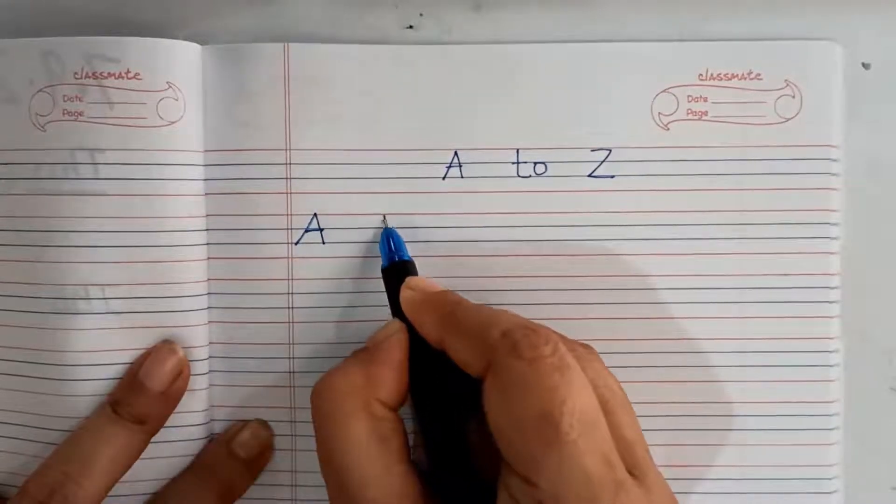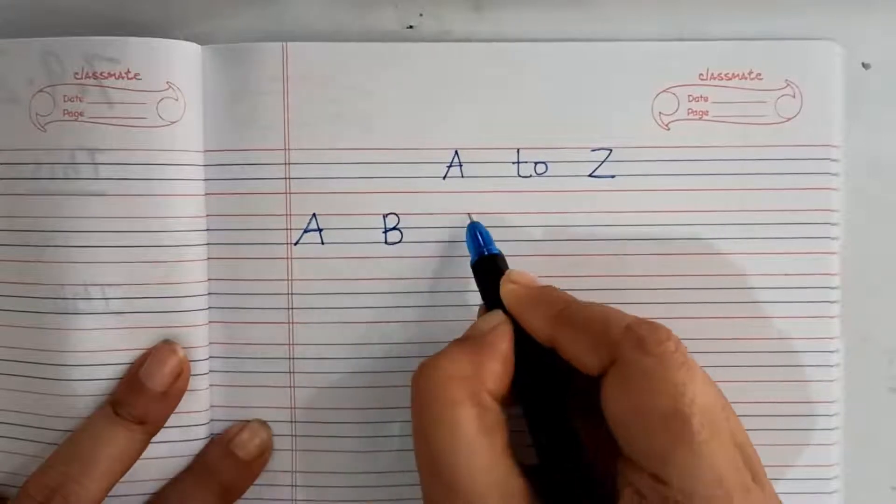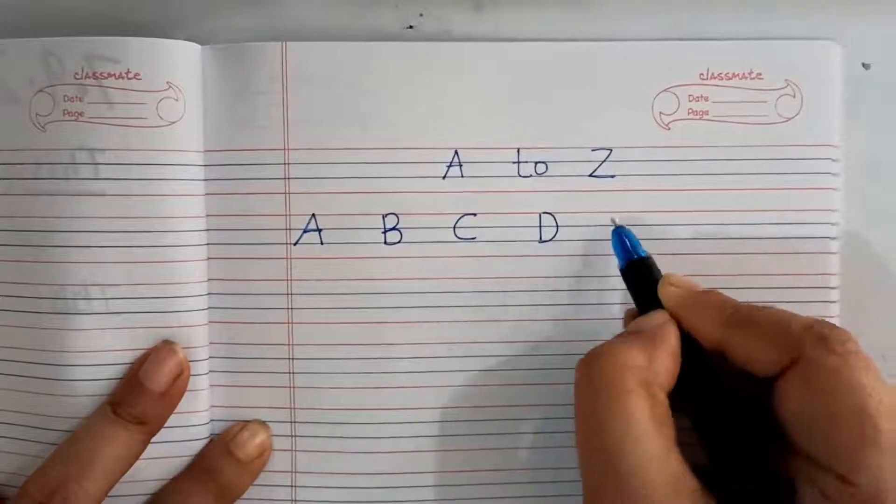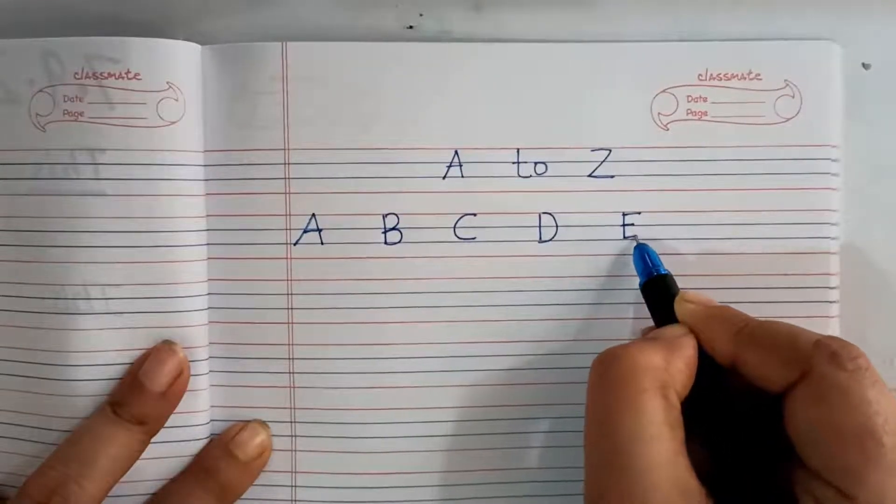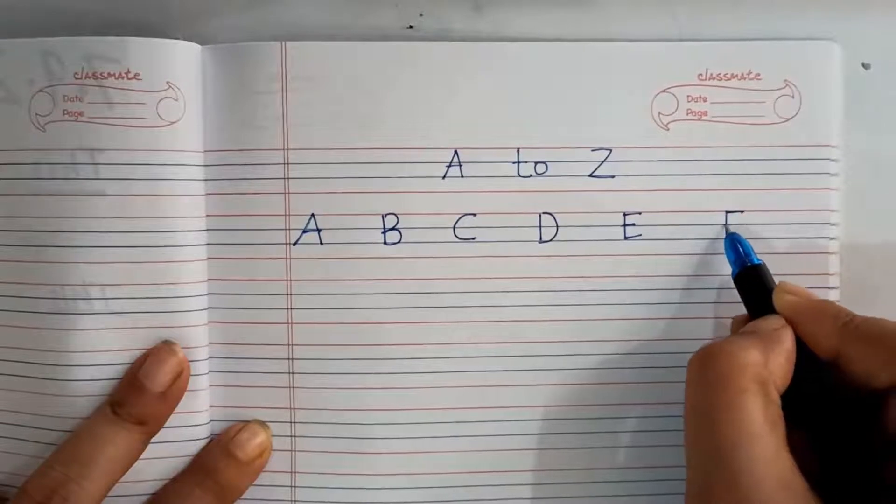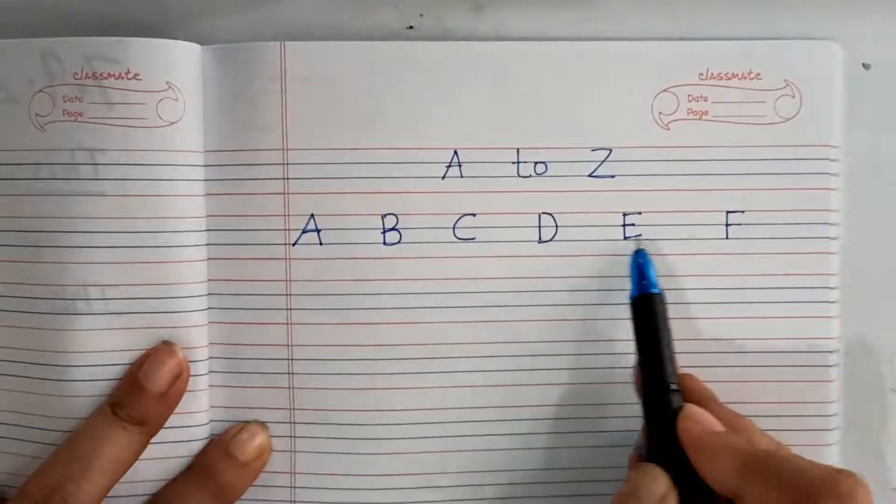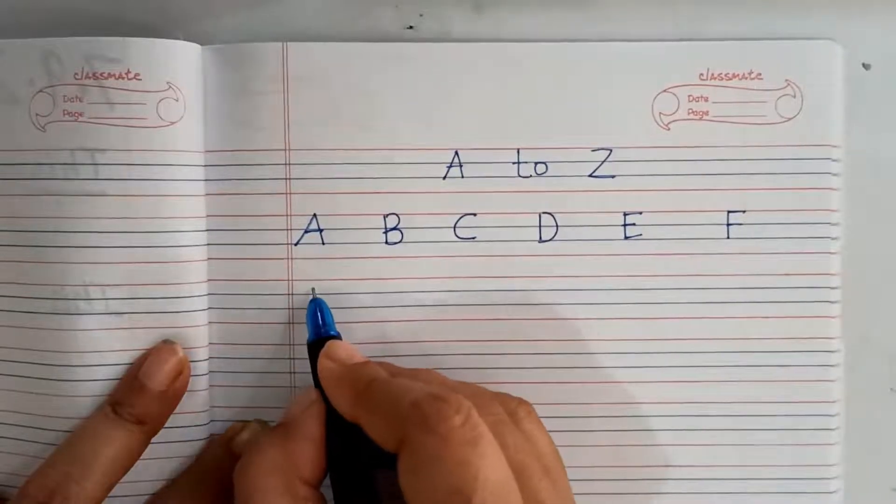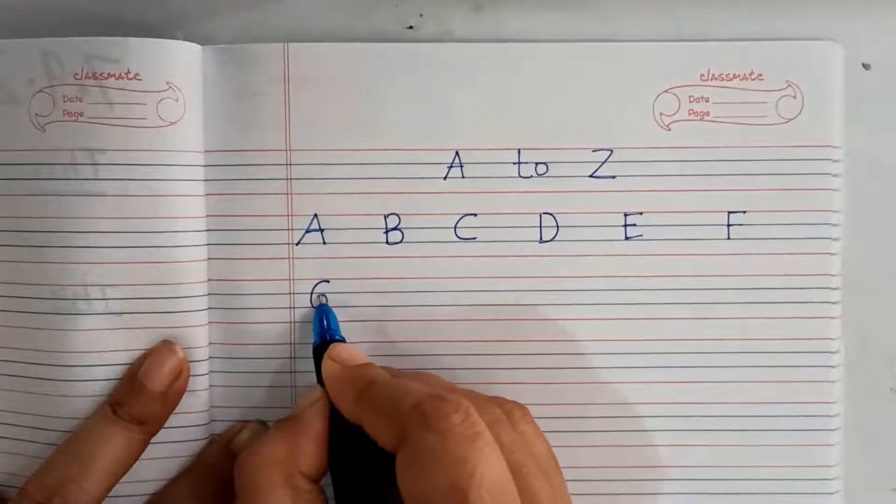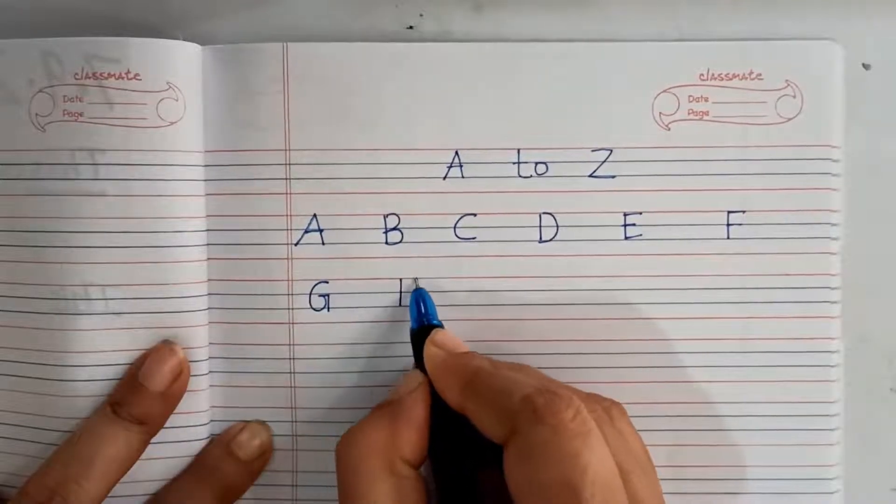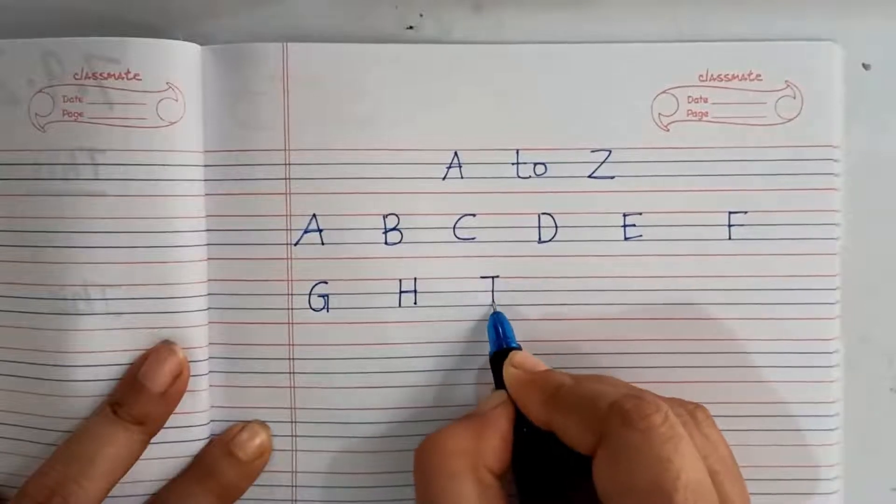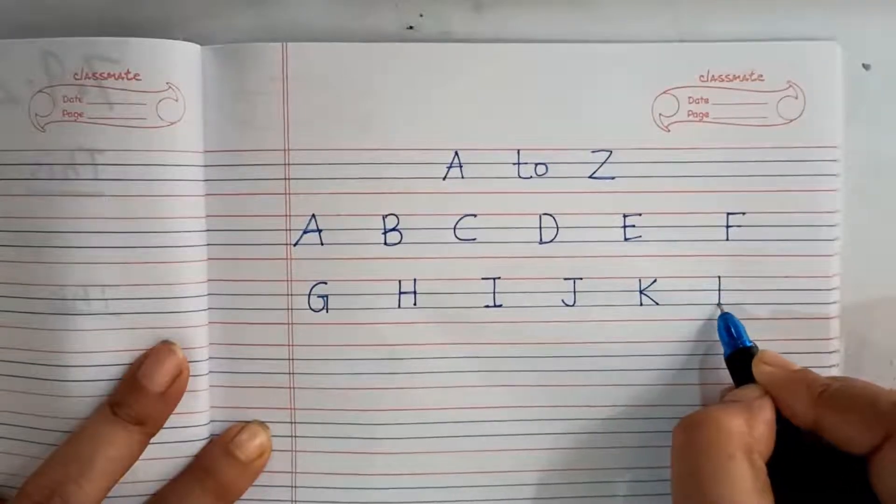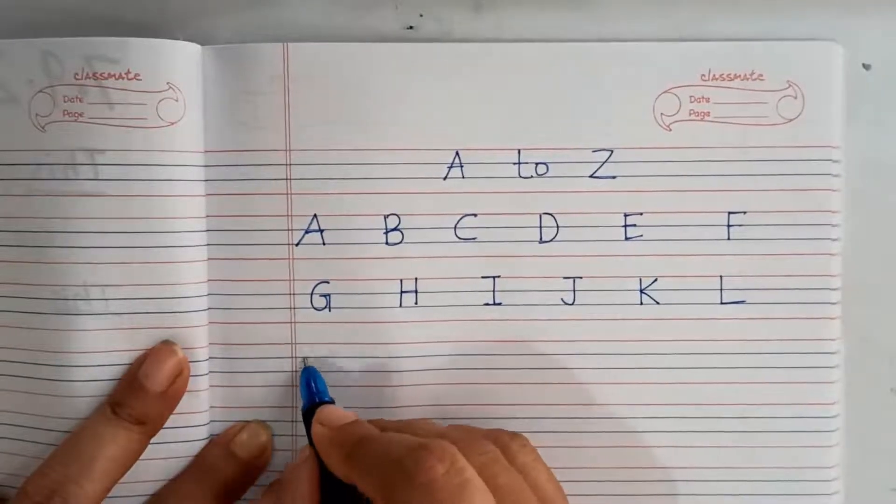A, B, C, D, E, F. See I am giving the below line blank, keeping the below line blank. After E, F, F ke baad G, H, I, J, K, L.